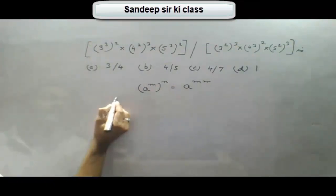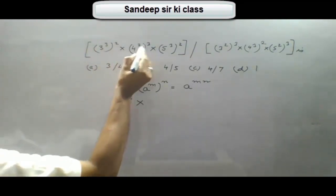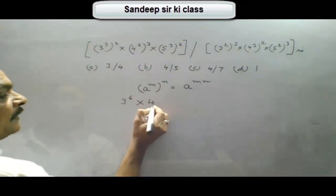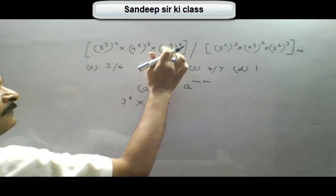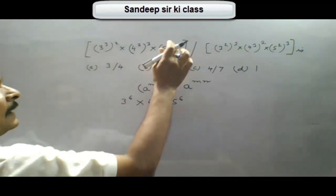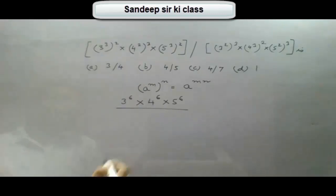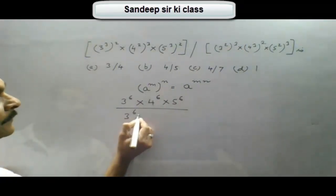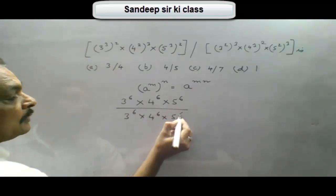In the numerator we will have 3 to the power 6 into 4 to the power 6, because 2 and 3 are multiplied, so we get 4 to the power 6 into 5 to the power 6, because 3 and 2 are multiplied. Similarly in the denominator we get 3 to the power 6 into 4 to the power 6 into 5 to the power 6.